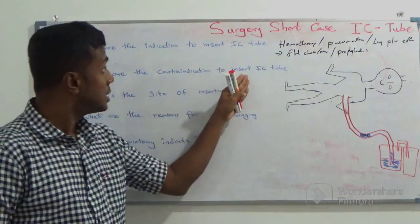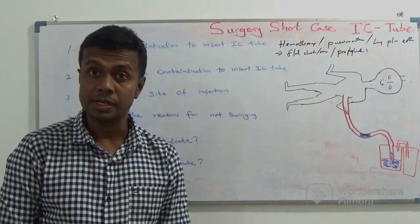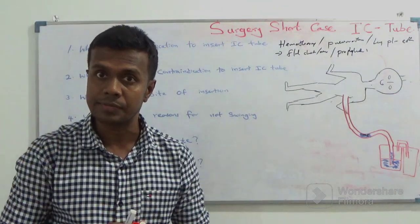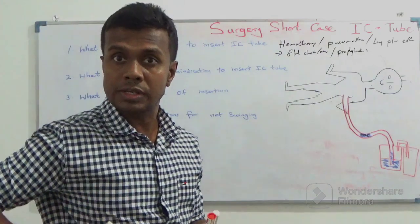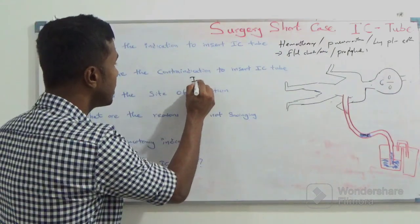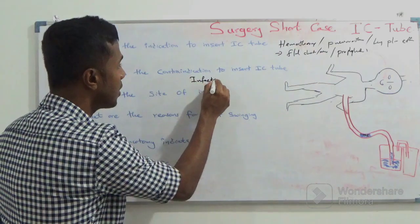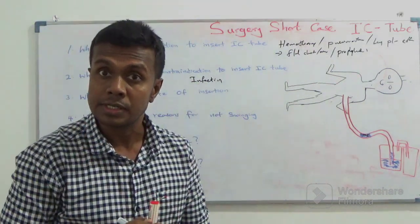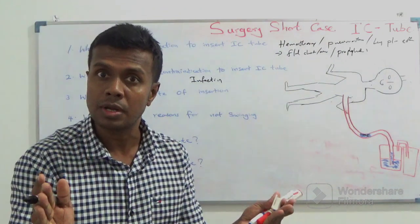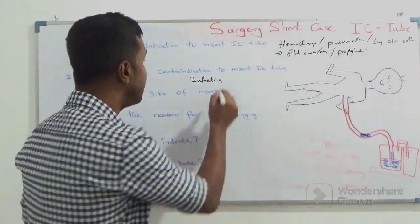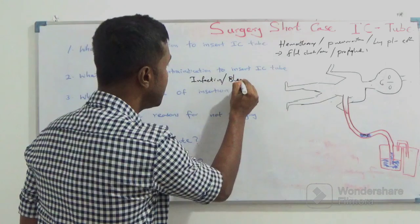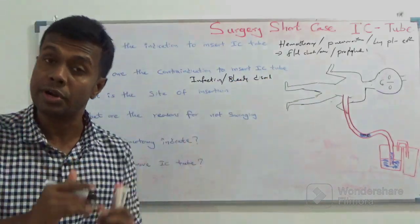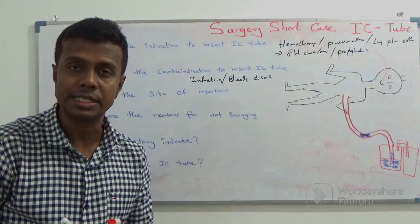What are the contraindications to insert an IC tube? There are two contraindications: infection at the site of insertion, and severe uncontrolled bleeding disorder. Those are the two contraindications to insert an IC tube.